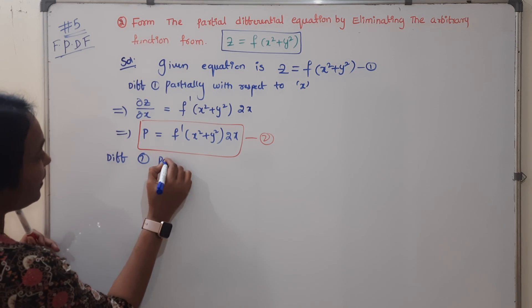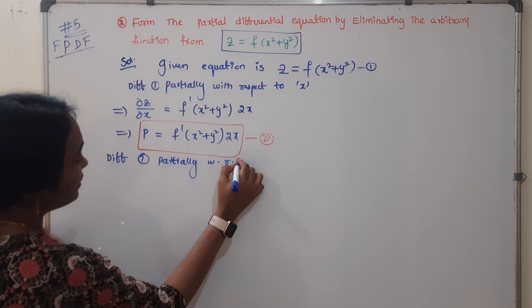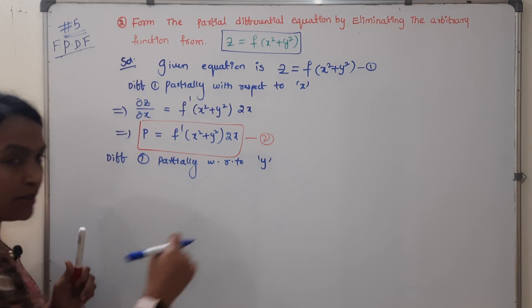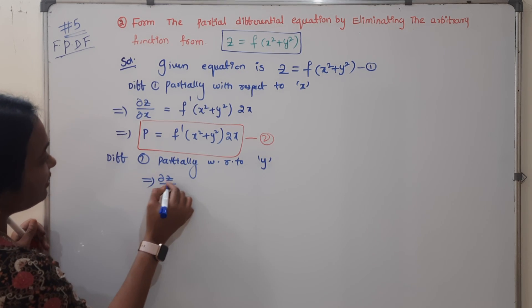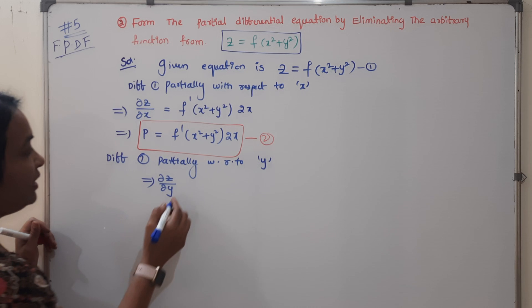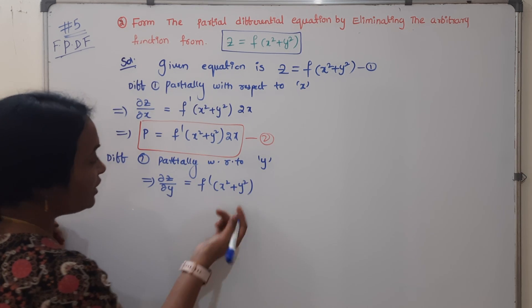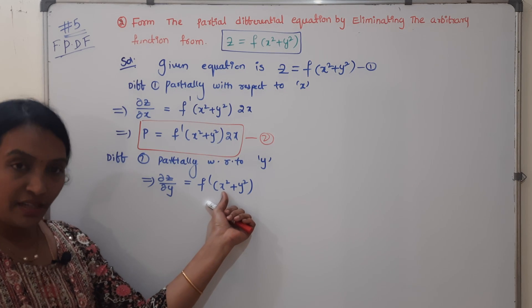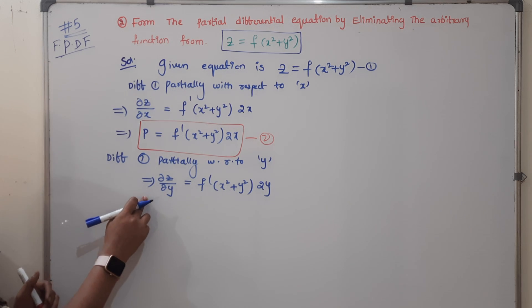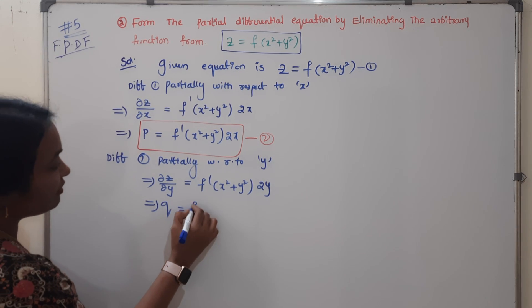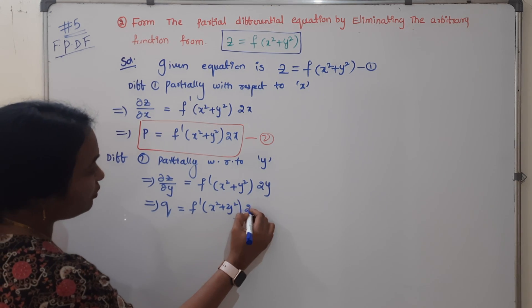Again differentiate equation 1 partially — this time with respect to y. dou Z by dou Y gives: f dash of (x² + y²), and y² differentiates with respect to y to give 2y. So dou Z by dou Y, which is q, equals f dash(x² + y²) into 2y. This is equation 3.